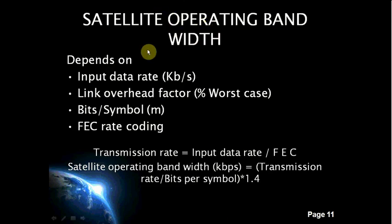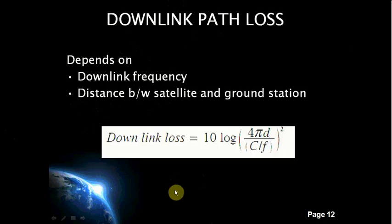Satellite operating bandwidth depends upon the input data rate, link overhead factor, bits per symbol, and FEC rate coding. Input data rate is the actual number of message signals per second. The link overhead factor represents additional transmitting delay between message bits to avoid collision or inter-symbol interference. Bits per symbol is defined as the number of symbols transmitted per bit. FEC, or forward error correction, enables the receiver to both detect and correct errors without needing to inform the transmitter. The formulas used are shown here. Downlink path loss depends upon the downlink frequency and distance between the satellite and ground station. For C band, the downlink frequency is on the order of 4 GHz, and it is 12 GHz for Ku band.